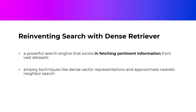Reinventing Search with Dense Retrieval. RAG relies on dense retrieval, a powerful search engine that excels in fetching pertinent information from vast datasets. It's as if the AI dons a detective hat, skillfully locating the most relevant clues in a vast data landscape. Dense retrieval employs techniques like dense vector representations and approximate nearest neighbor search to identify relevant documents or passages efficiently — like having a librarian with instant access to a comprehensive card catalog, ensuring the most relevant books are always within reach.